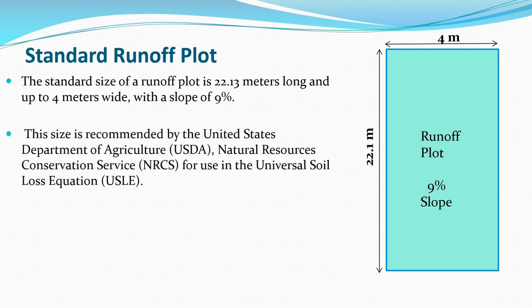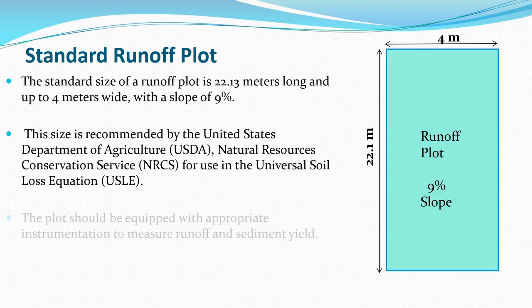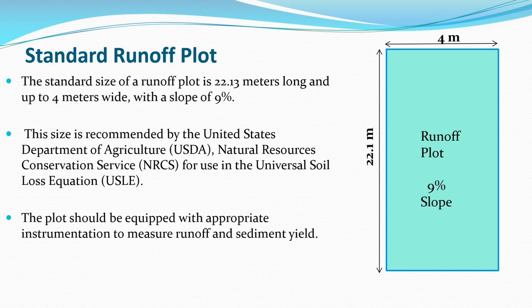The plot should be equipped with appropriate instrumentation to measure runoff and sediment yield. Usually the runoff is collected in a tank and the amount of soil is also measured. Soil Erodibility Index K is the soil loss per unit Rainfall Erosivity Index for a specified soil, as measured on a unit plot 22.1 meters in length with a 9 percent uniform slope.